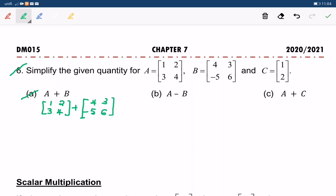And it is equal to: 1 plus 4 equals 5, 2 plus 3 also equals 5, 3 plus negative 5 is negative 2, and 4 plus 6 equals 10. Okay, done. This is 6A.